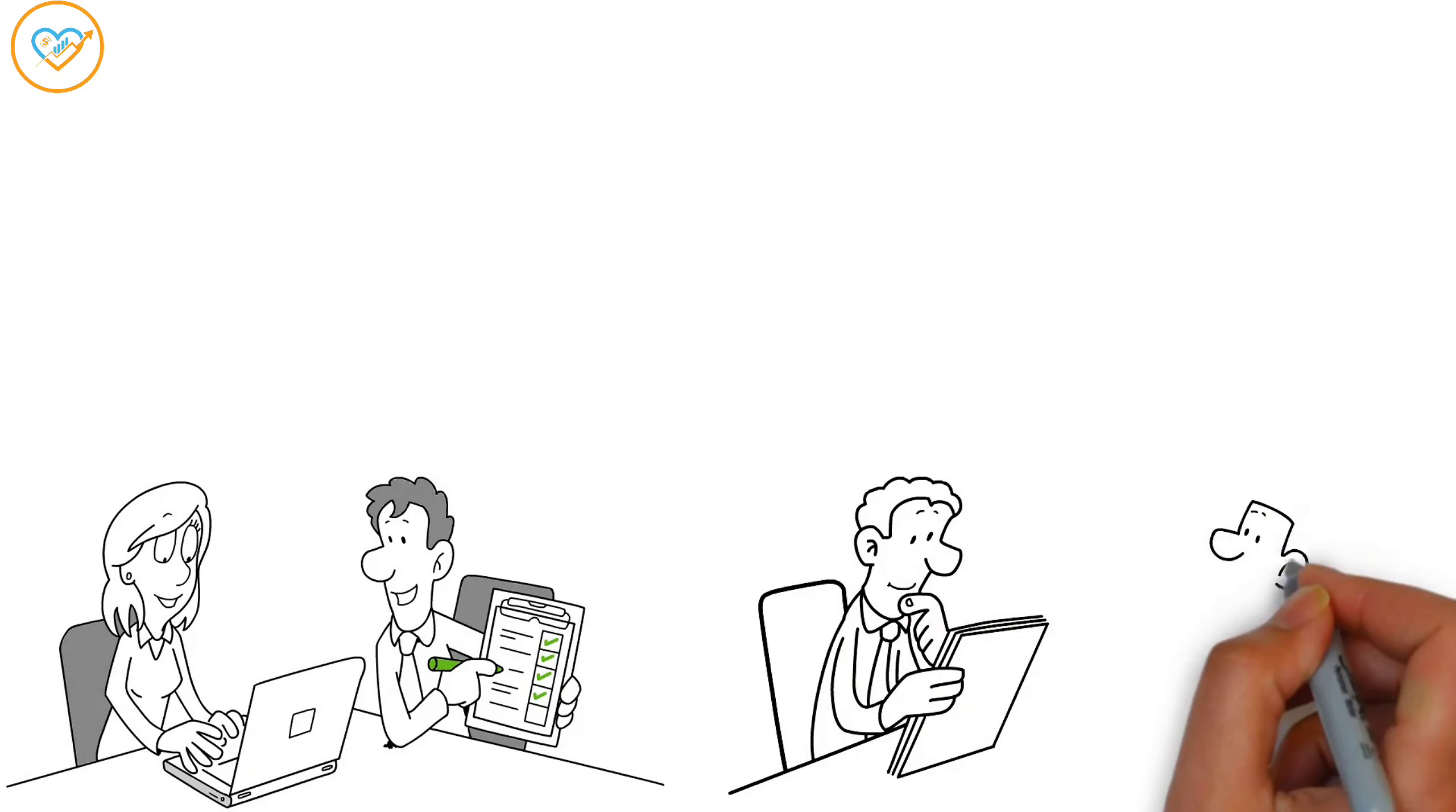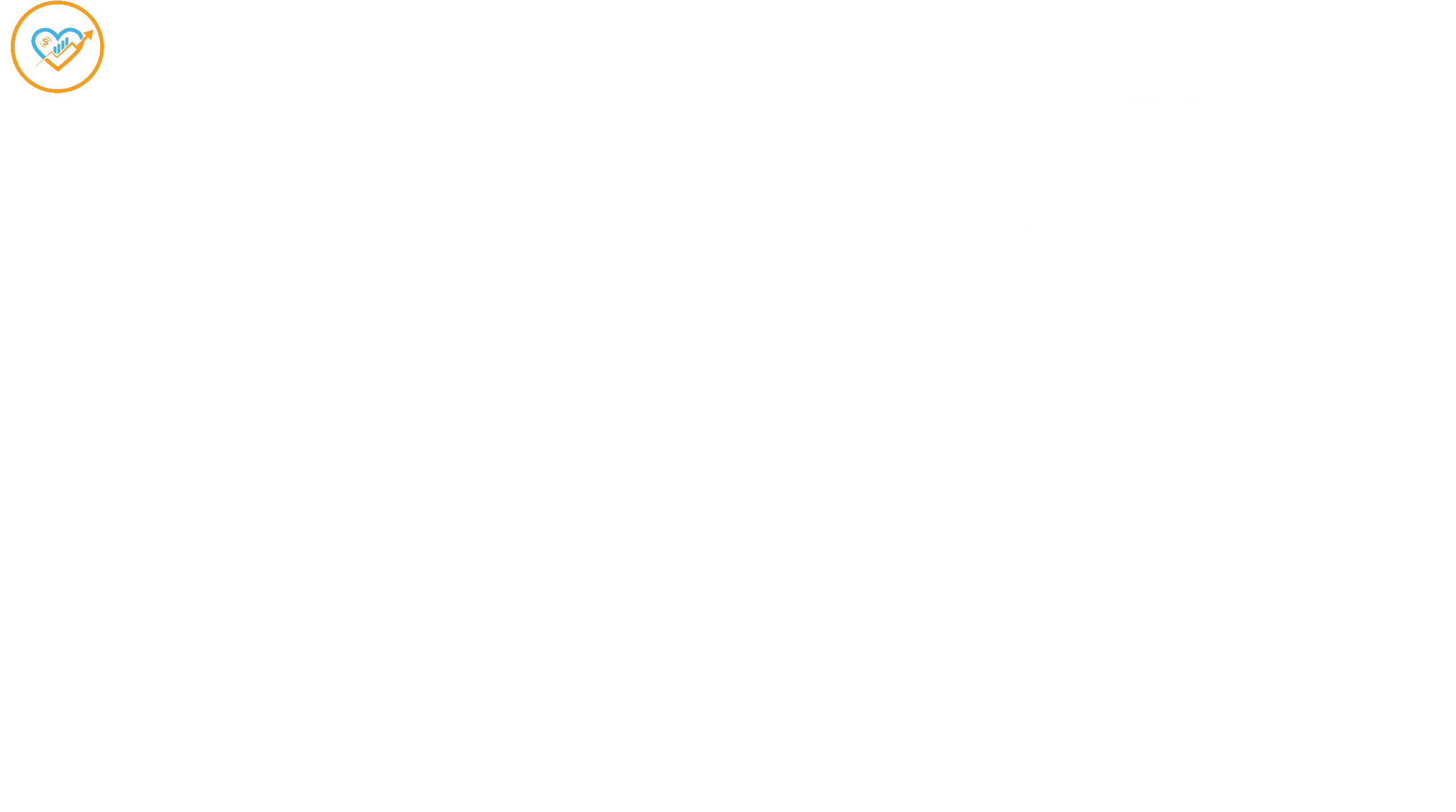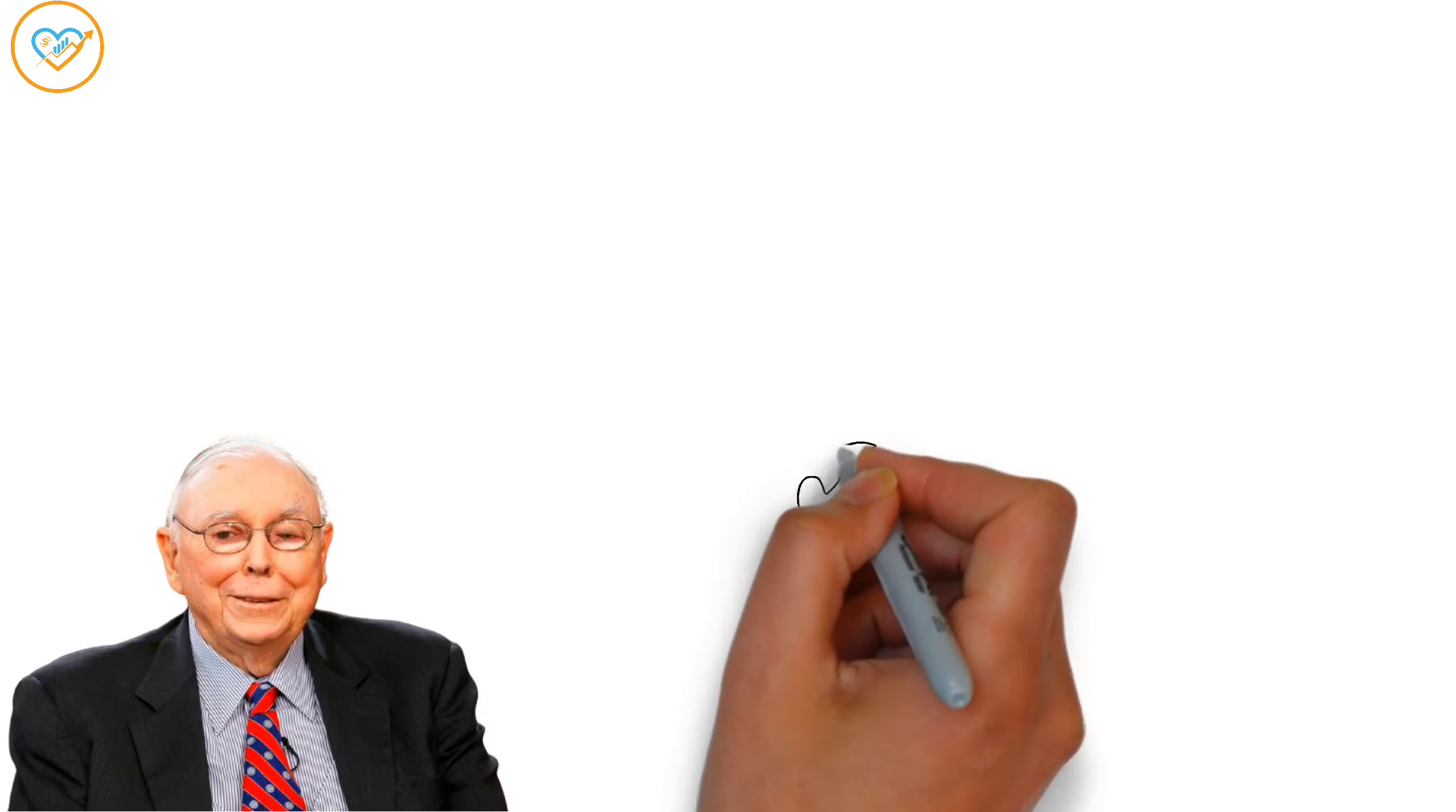Some skills are super useful in lots of different jobs, like marketing and coding. These are things that lots of companies want, but not everyone can do. Just like Charlie Munger said, develop into a lifelong self-learner through voracious reading.